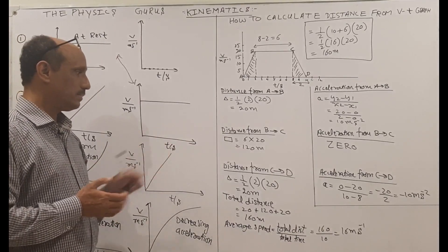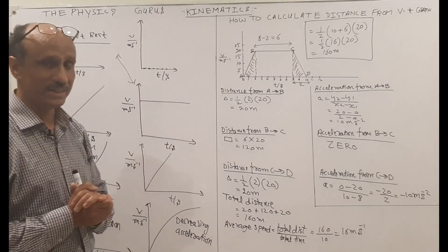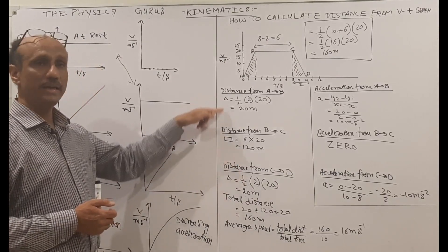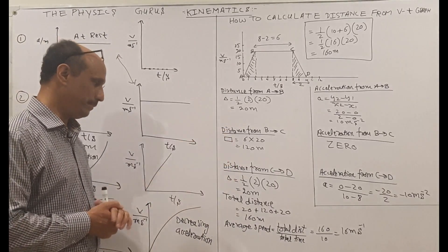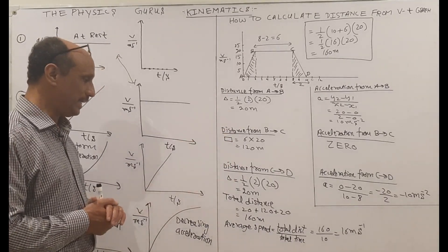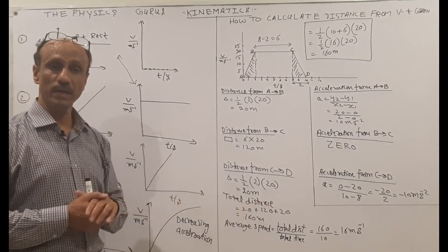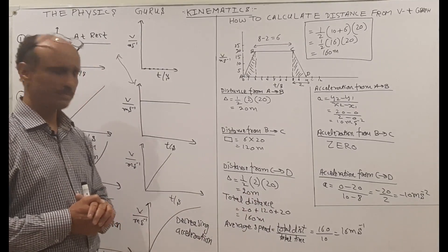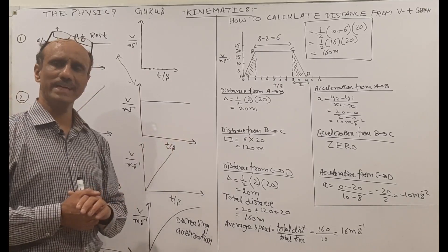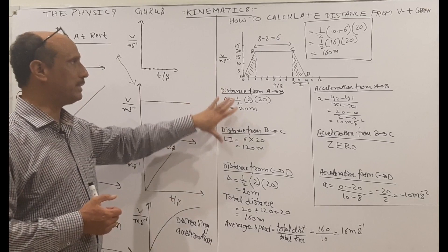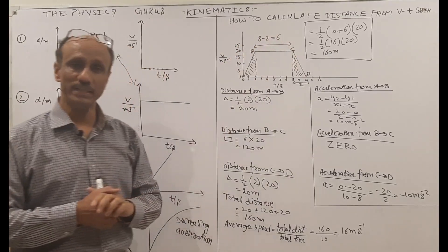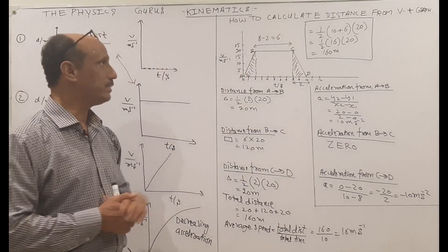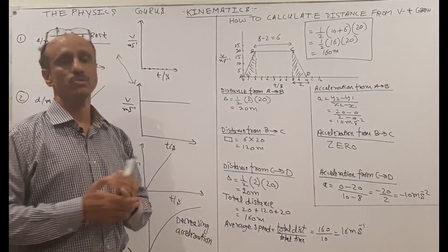The paper may ask for the total distance traveled and the average speed. We add the distances: A to B, B to C, and C to D — that gives 160 meters. Then applying the formula average speed = total distance / total time = 160 / 10 = 16 meters per second. If the question asks for total distance directly instead of by segments, you can apply the trapezium formula: ½ × (sum of parallel sides) × (distance between parallel sides), and you will get the same answer of 160 meters.